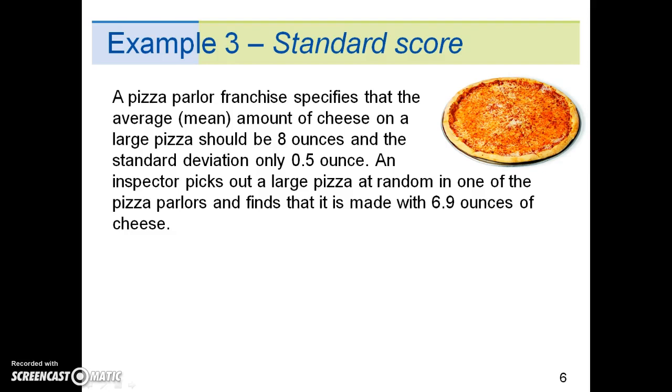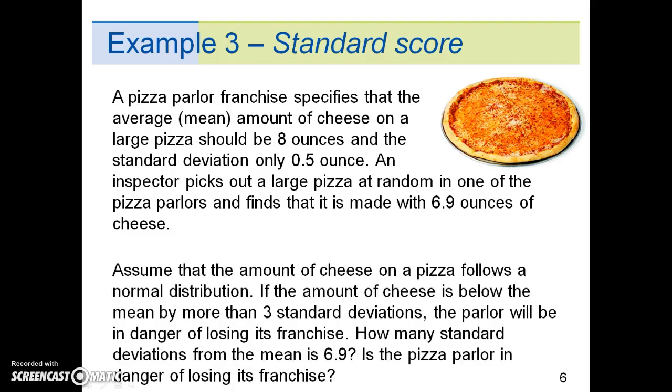Example 3 allows us to use the z-score formula. A pizza parlor franchise specifies that the average amount of cheese on a large pizza should be 8 ounces and the standard deviation only 0.5 ounce. An inspector picks out a large pizza at random in one of the pizza parlors and finds that it is made with 6.9 ounces of cheese.